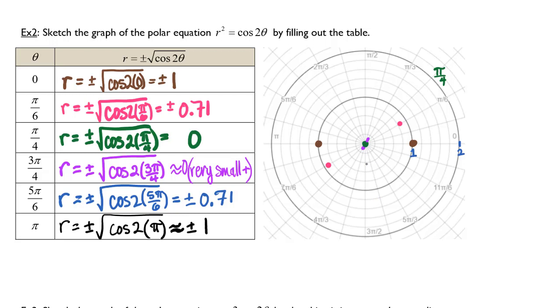And then at 5 pi over 6, we're at plus or minus 0.7 again. And then at pi, we are at plus or minus 1 again.